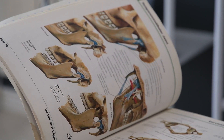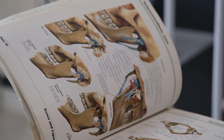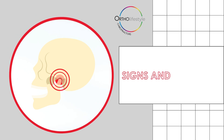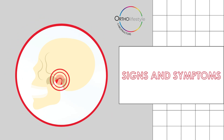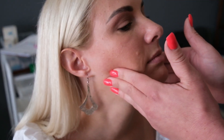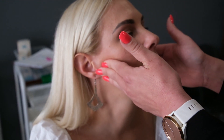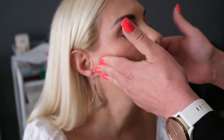Temporomandibular disorder, or TMD, is characterized by pain and tenderness due to a dysfunction of the TMJ. The signs and symptoms of TMJ disorder may include pain or tenderness of the jaw, difficulty chewing or pain while chewing, locking of the joint, clicking, grinding, popping, aching pain in and around the ear, and headache and neck pain.